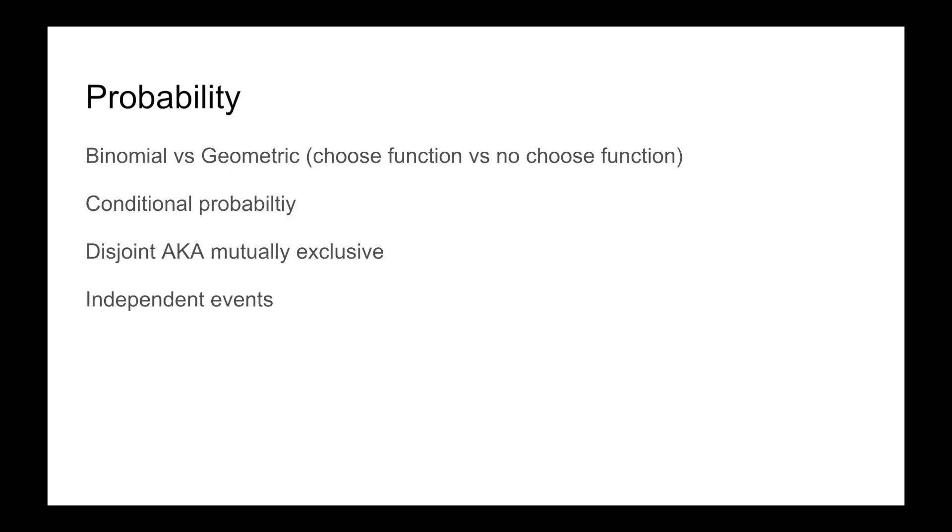Disjoint, also known as mutually exclusive events, means that both cannot be true simultaneously. This is very different from independent events, meaning that one being true does not affect the other. In other words, the probability of A given B equals the probability of A normally.